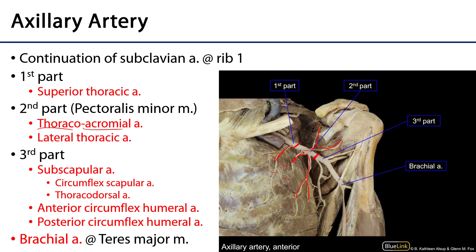The third part of the axillary artery has three major branches. First is the subscapular artery, which can supply the infraspinatus, the teres muscles major and minor, and the subscapularis muscle with blood. It has two important branches: the thoracodorsal artery, which is the main blood supply to latissimus dorsi, and the circumflex scapular artery, which wraps around the scapula supplying the infraspinatus as well as the teres major and minor with blood, as we can see here.